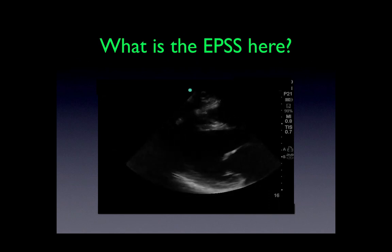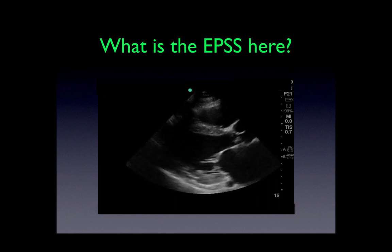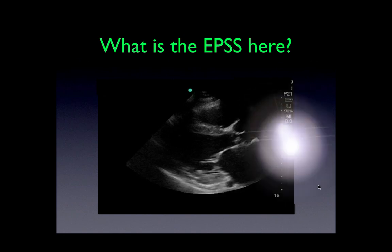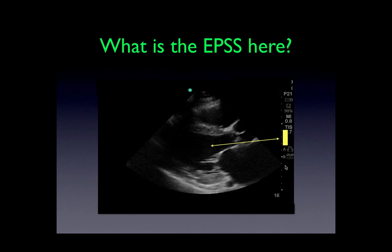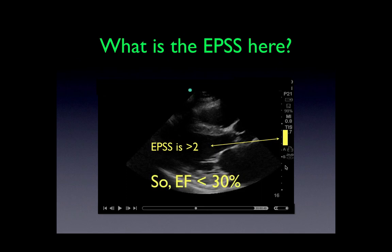Now, what's the EPSS here? Let's take a look at the mitral valve. The image is now frozen and the mitral valve is sitting over here. On the scale to the right, going from the top of the screen down to the bottom, the depth is set to 16 centimeters. Each hatch mark represents one centimeter. So this yellow bar is showing a two centimeter separation. In other words, if the separation between the anterior leaflet and the septum is greater than this, the ejection fraction is less than 30%. The EPSS is definitely greater than two — therefore, the ejection fraction is definitely less than 30%.